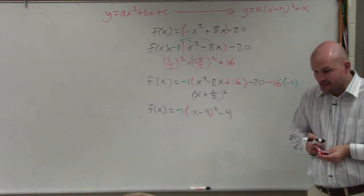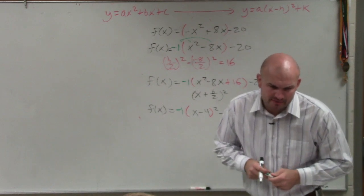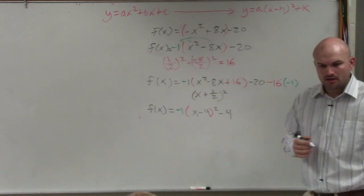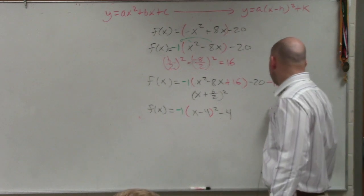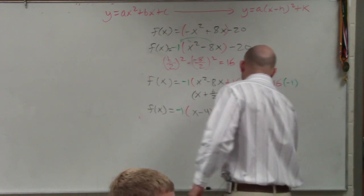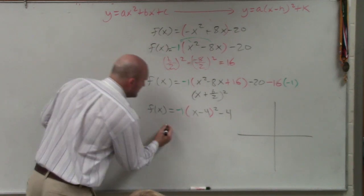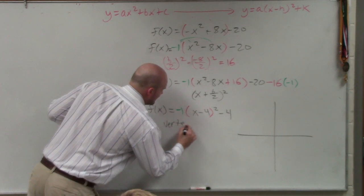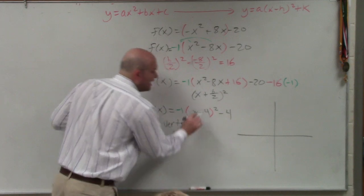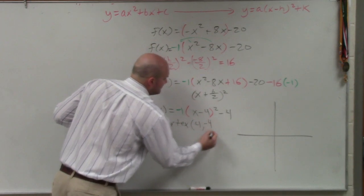So now they're asking you to graph, determine the max, and the min. And we need to talk a little bit more about domain and range, so we'll talk about that here. So first thing we do, the nice thing about this, is it's in vertex form. So we know my vertex is h comma k.